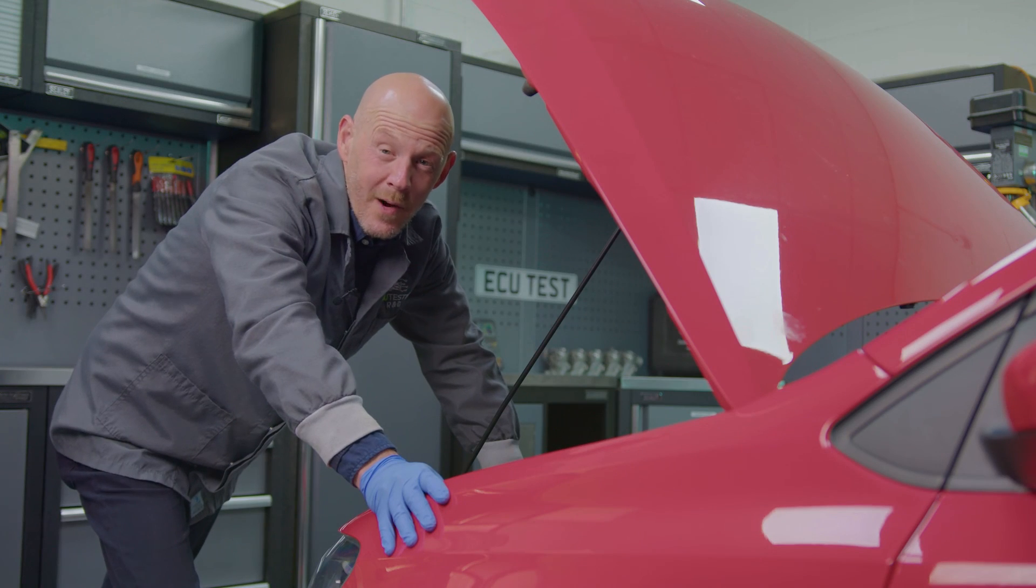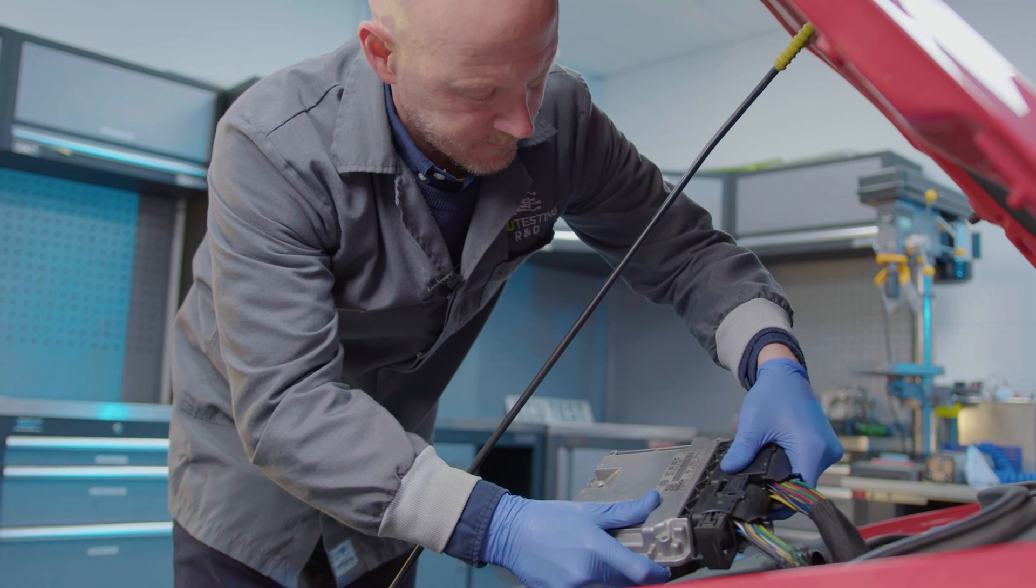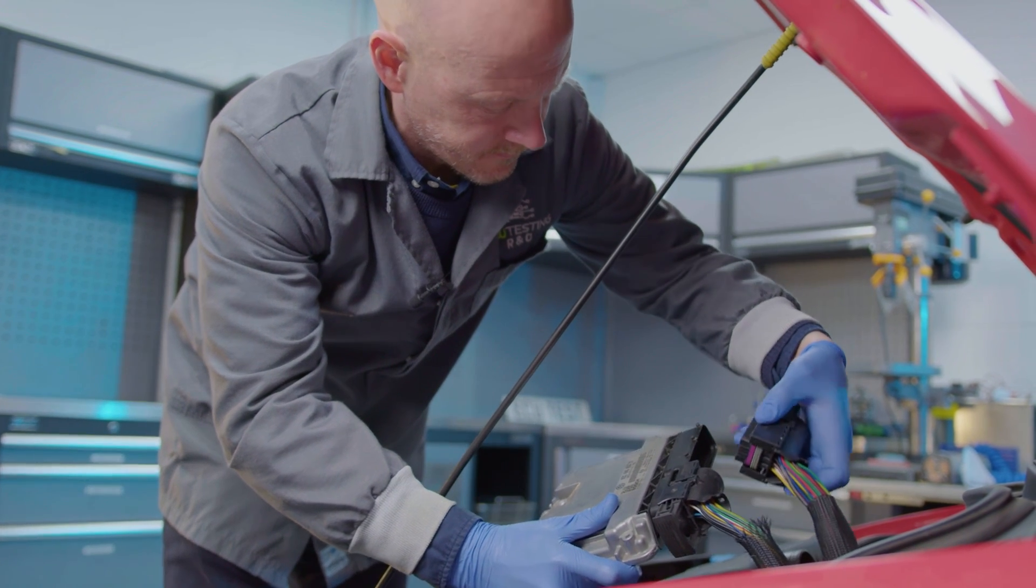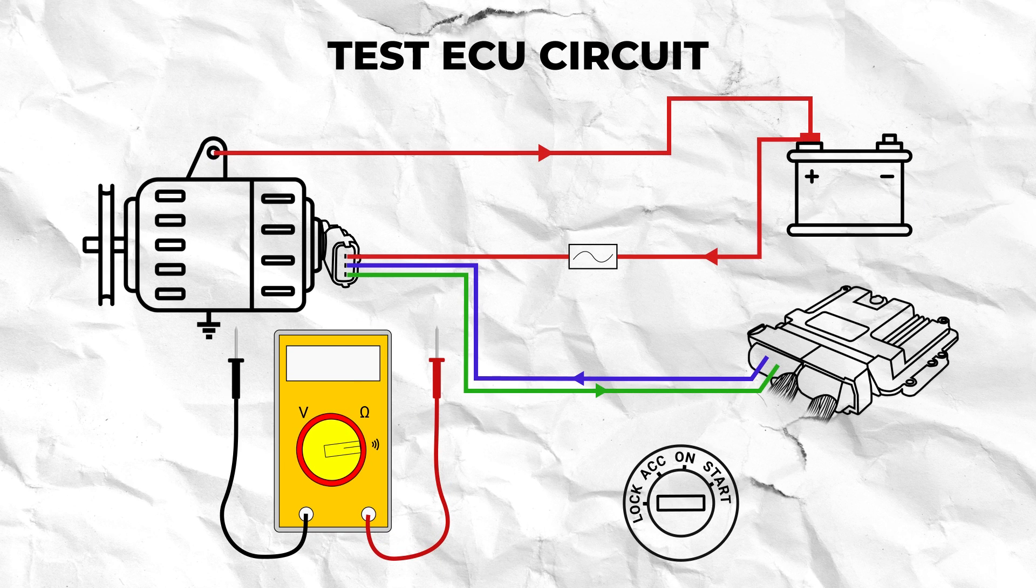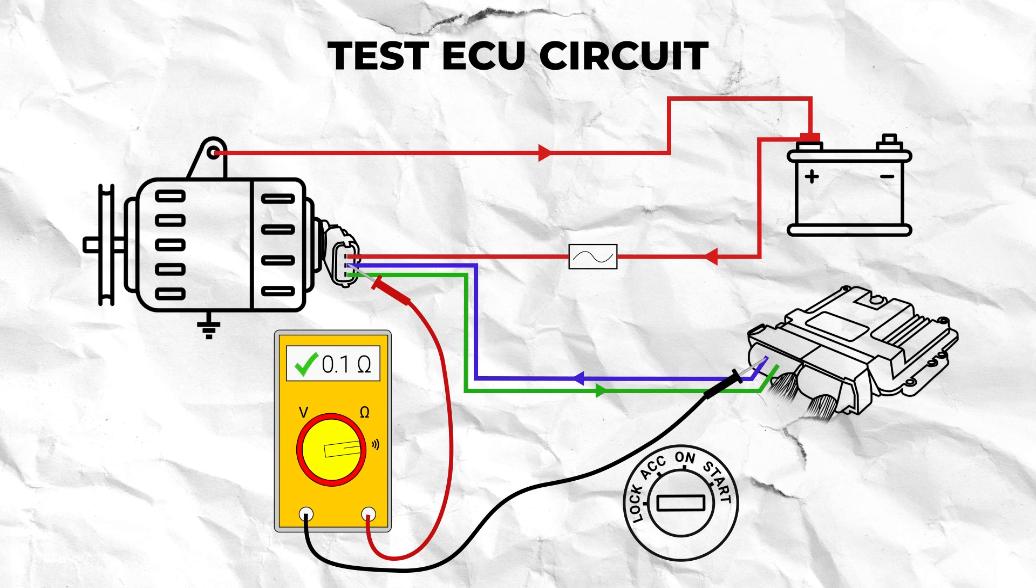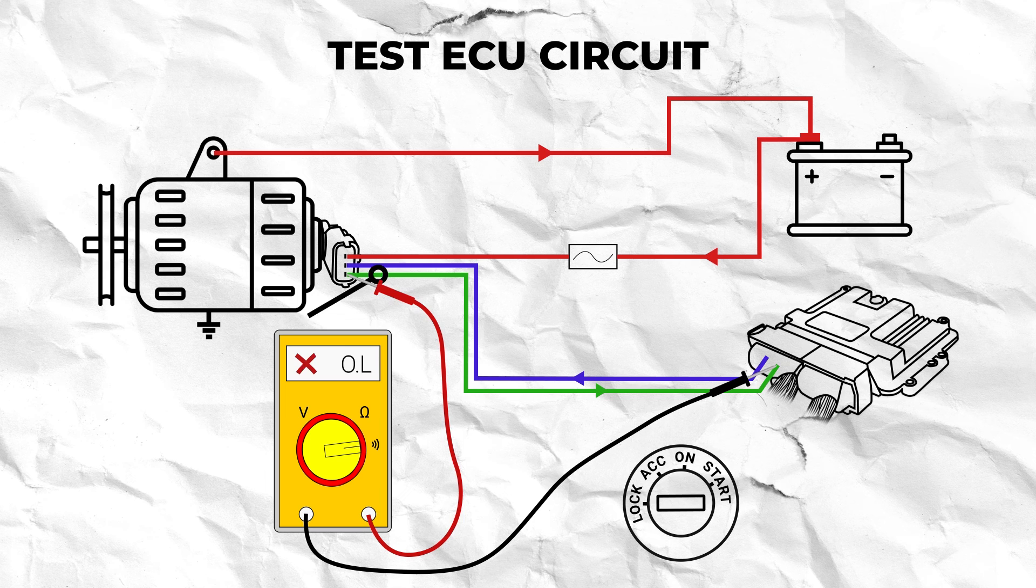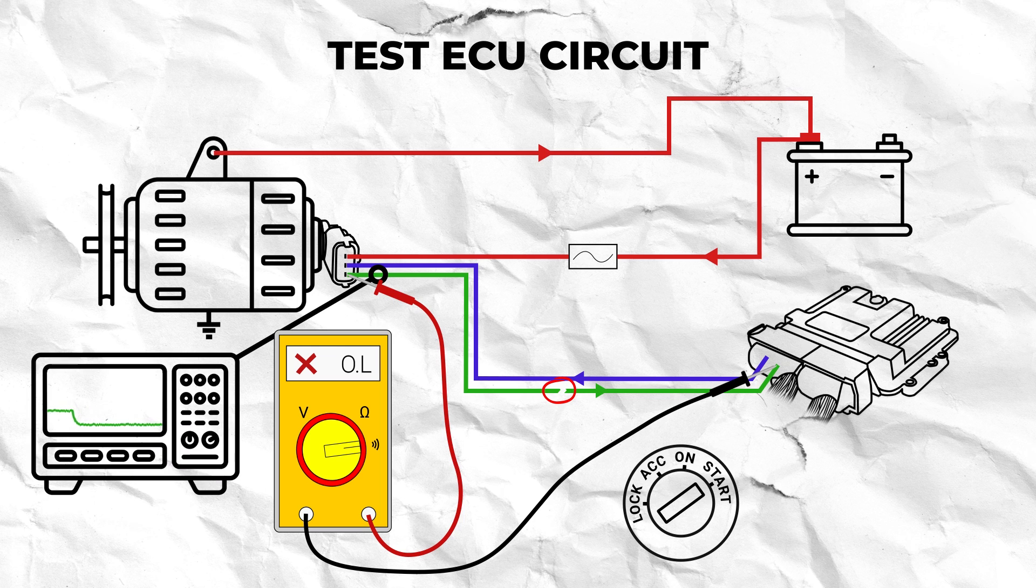If any of these show irregularities in the waveform then unplug the alternator connector and corresponding ECU connectors and check for any corrosion or poor terminal tension. Then test the continuity of the suspect wire or wires to ensure there isn't a fault which is causing a poor signal to and from the ECU.